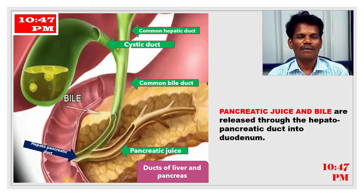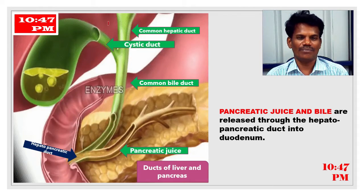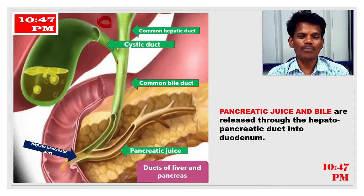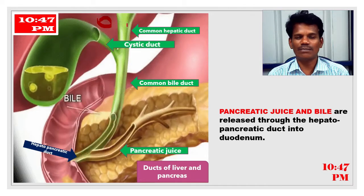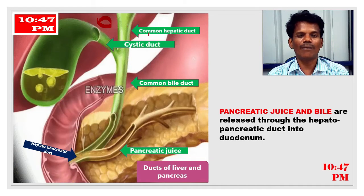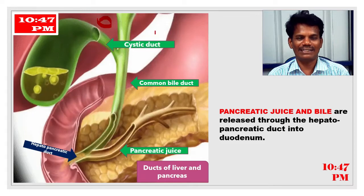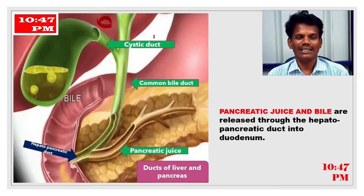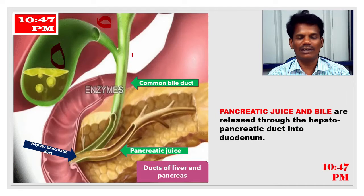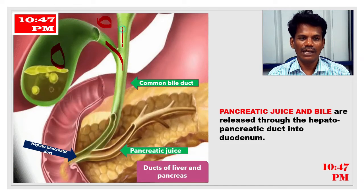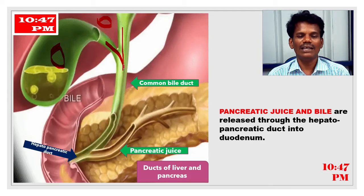Bile is secreted in the liver and poured into the duodenum via ducts. The duct that brings bile juice from the liver is called the common hepatic duct. The cystic duct brings bile juice from the gallbladder. The hepatic duct and cystic duct then unite to form the common bile duct.